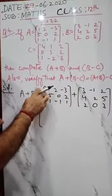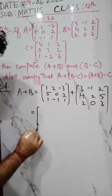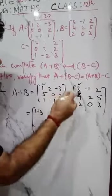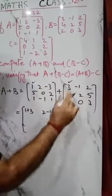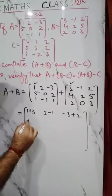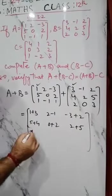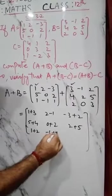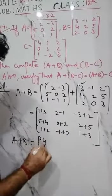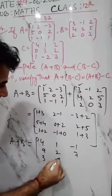Now let us add them. As you know, the first entry of the first matrix you have to add to the first entry of the second matrix. So: 1 plus 3, then 2 plus minus 1 gives 1, then minus 3 plus 2. In the second row: 5 plus 4, 0 plus 2, then 2 plus 5. Third row: 1 plus 2, minus 1 plus 0, and 1 plus 3. So you will get A plus B as 4, 1, minus 1 in the first row; then 9, 2, 7 in the second row; and 3, minus 1, 4 in the third row.